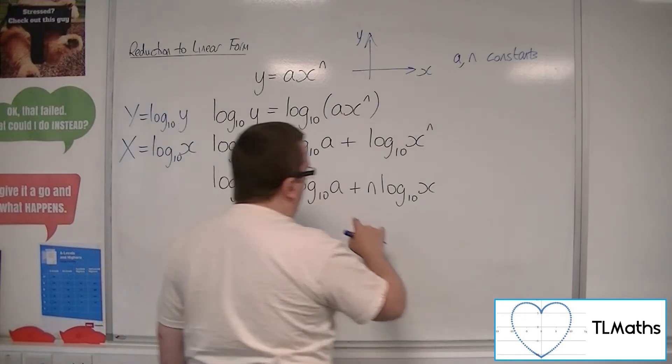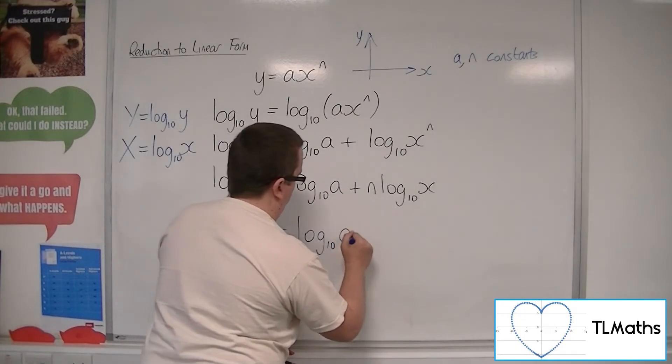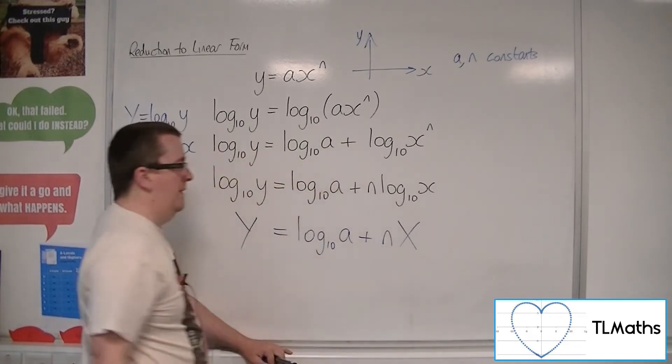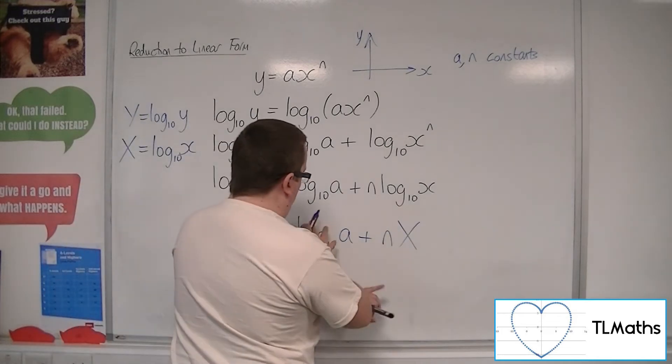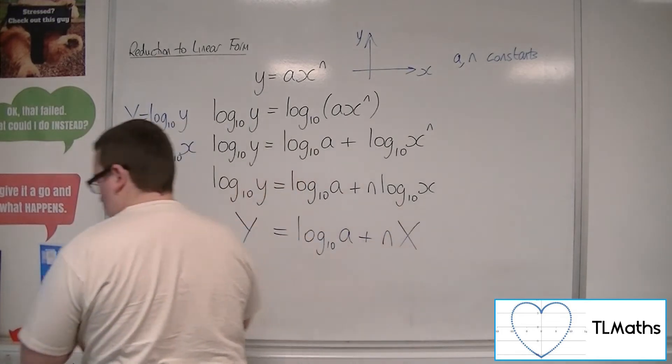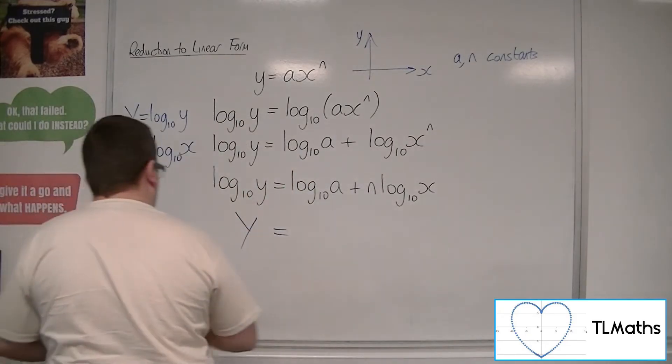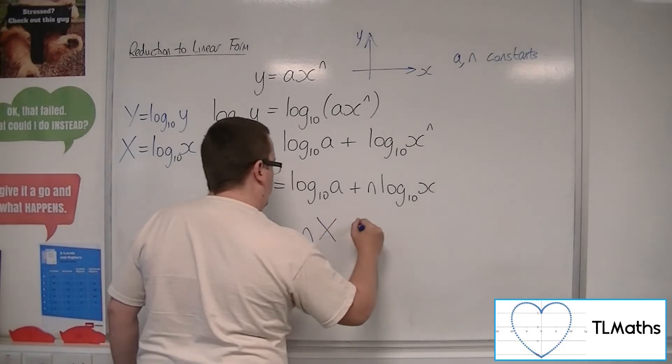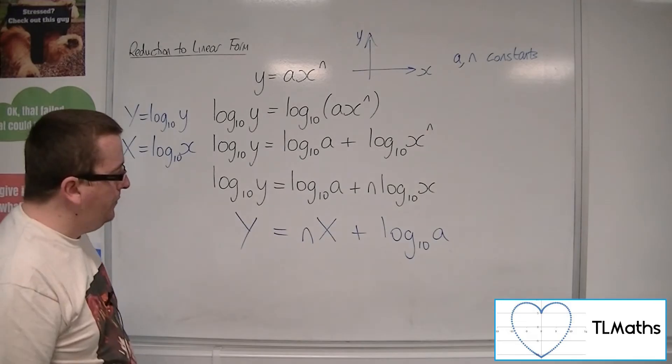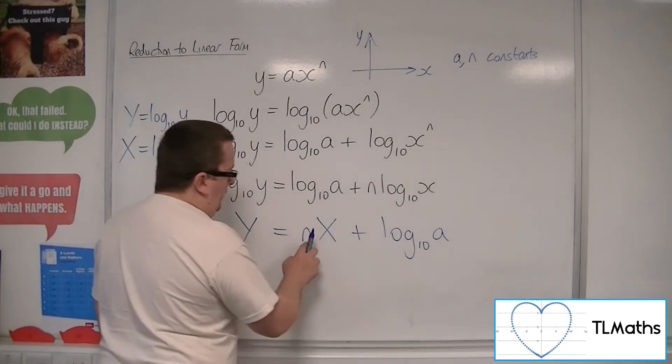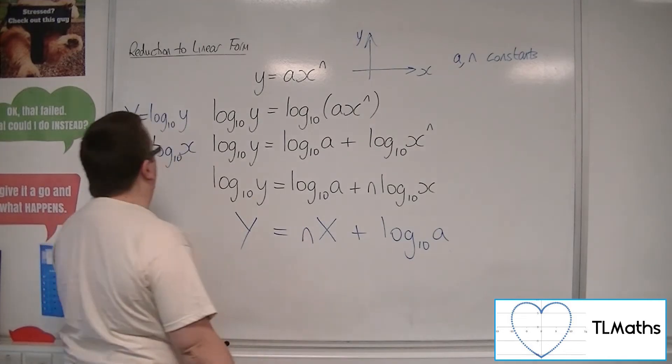Now, log 10a... well, let's just write down what we've got now. Like that, right? Now, if I reorder these, so I'm just going to swap these round. Like so. All I've done is reorder them. This is just a number. Because it's a constant, it's just a number.